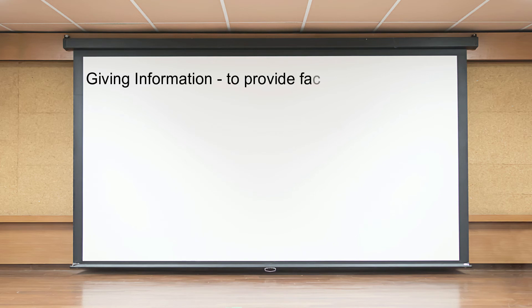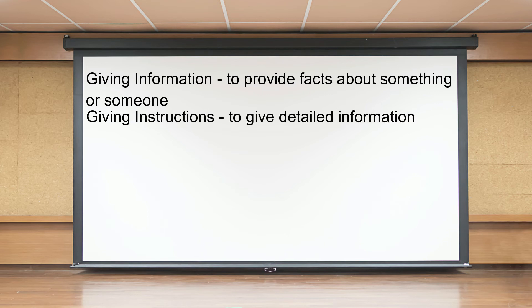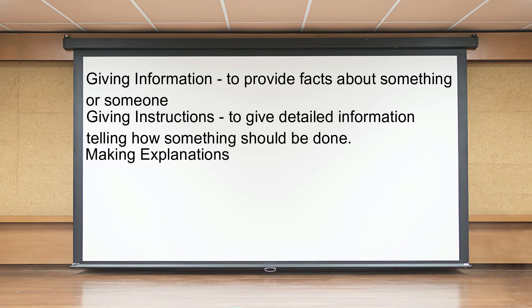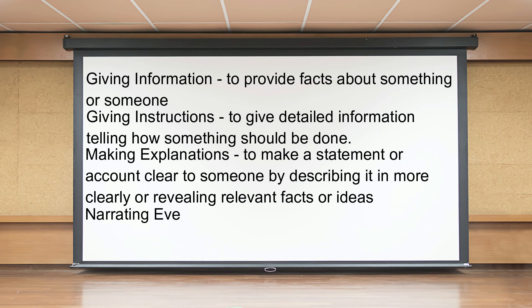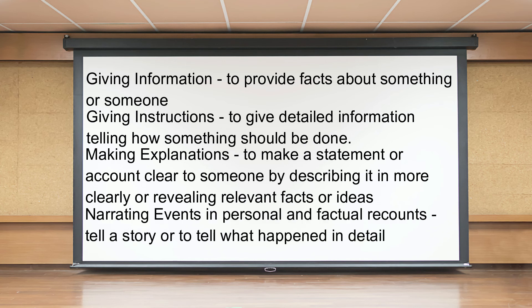1. Giving information means to provide facts about something or someone. 2. Giving instructions means to give detailed information telling how something should be done. 3. Making explanations means to make a statement or account clear to someone by describing it more clearly or revealing relevant facts or ideas. 4. Narrating events in personal and factual recounts means to tell a story or to tell what happened in detail.